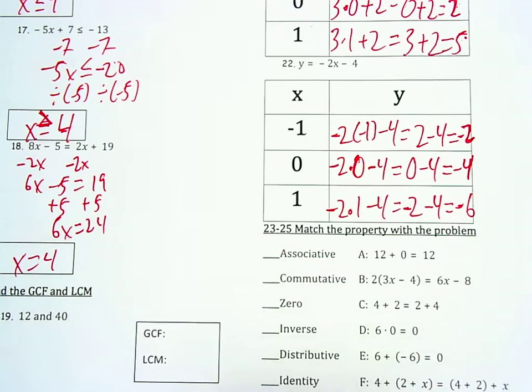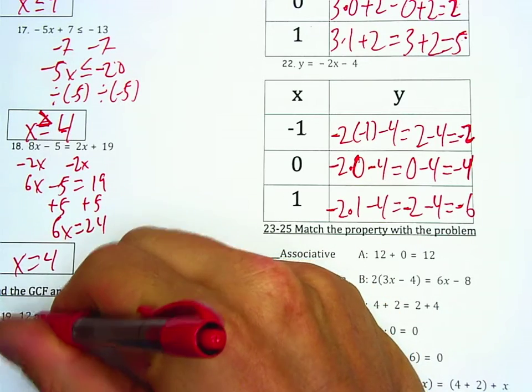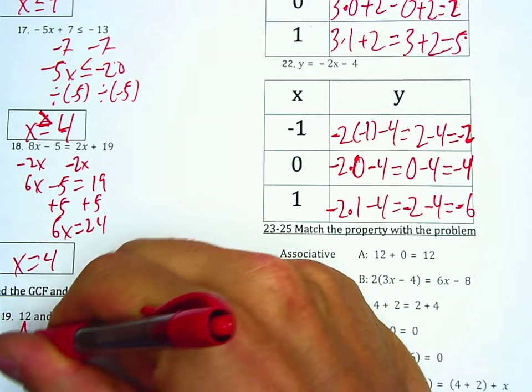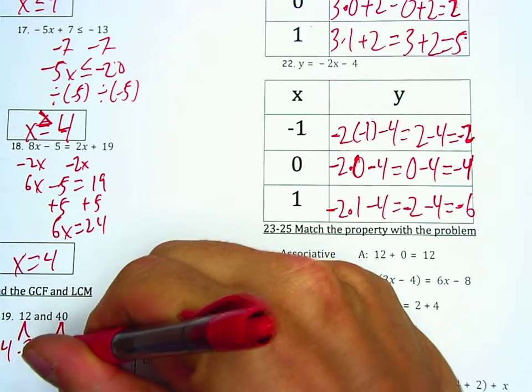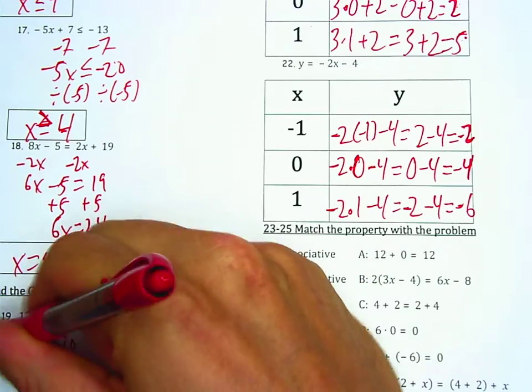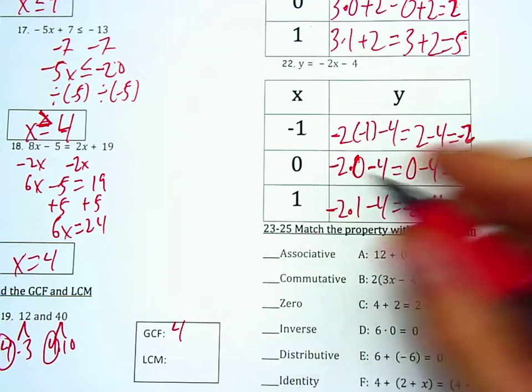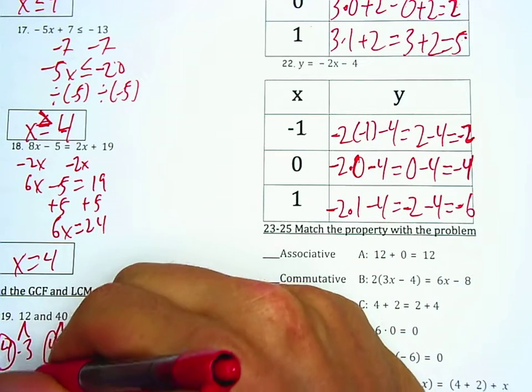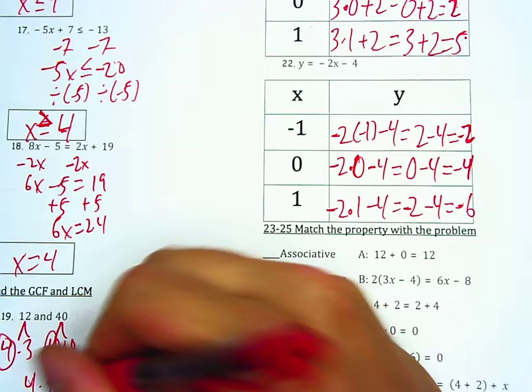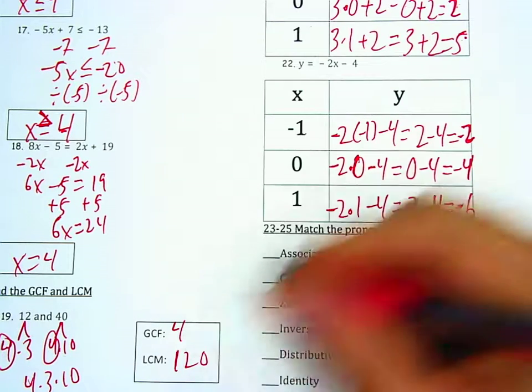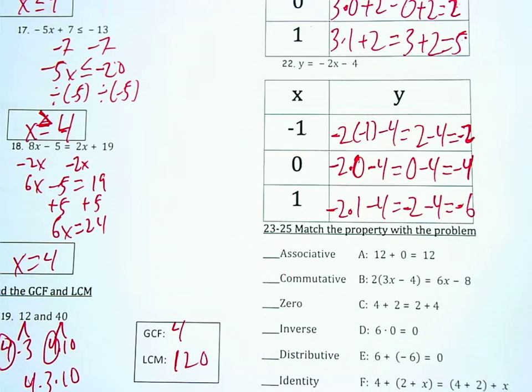All right, question 19. 12 is 4 times 3, and 40 is 4 times 10. My GCF is 4 because they're both multiple to 4. And my LCM is 4 times 3 times 10.